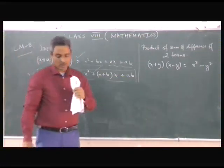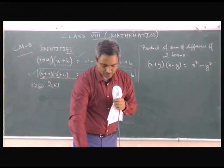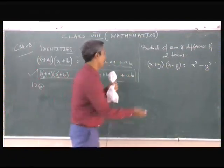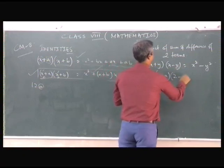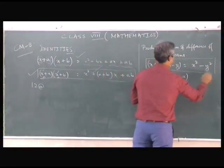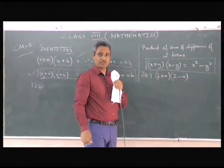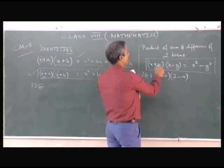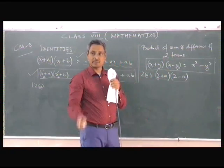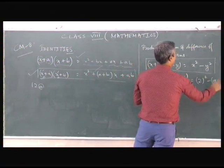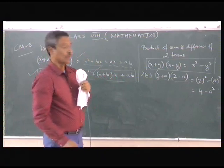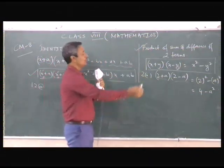Question 2, Part 2: use the direct method to evaluate (2 + a) into (2 − a). I'll see which formula we are using. Is it not the product of sum and difference? First terms are the same; we have (2 + a) and (2 − a), so it is the sum and difference of two terms. According to the formula: 2² − a² = 4 − a². I hope you understood — we have used this special product.